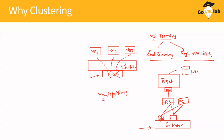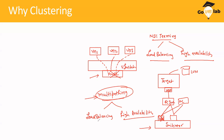If you recall our multipathing discussion, we talked about different algorithms like fixed path, most recently used, and round-robin policy. But in the end, multipathing also had two goals: load balancing and high availability. Multipathing gives us load balancing and high availability at the HBA level — the storage adapter level. NIC teaming gives us load balancing and high availability at the pNIC level.